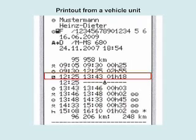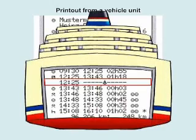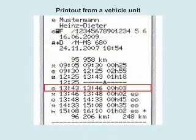Next is a period of availability of 1 hour 18 minutes, and the same again but indicating that the POA was on a boat. This is followed by a drive entry of 3 minutes.